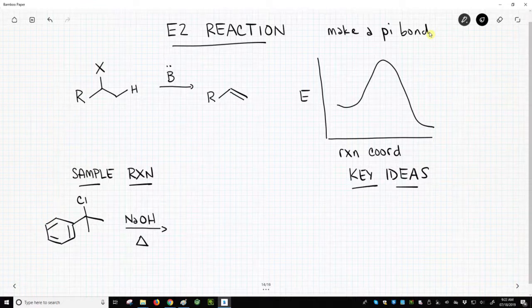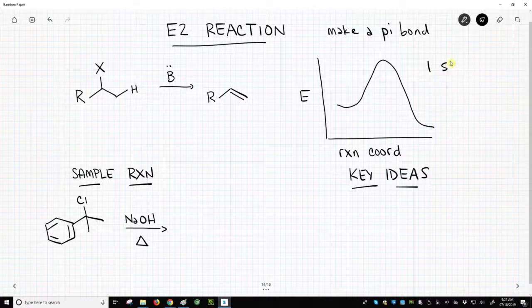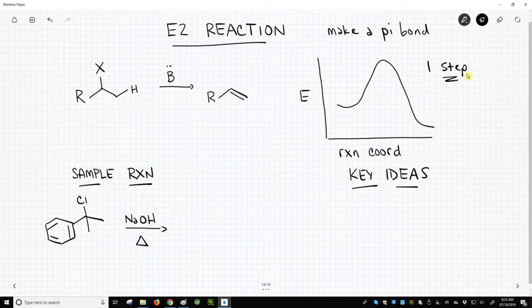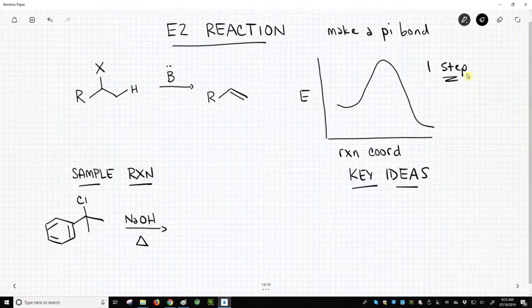Let's start on the right with the reaction coordinate. You can see this is a one-step process. As we go through the mechanism, we won't see intermediates. We won't see any carbocations or carbanions. It's all going to be one step. All bonds move at the same time.